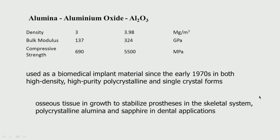Let us look a little bit at each one of these biomaterials. The oxides — alumina (aluminium oxide, Al2O3) — has a certain density, bulk modulus, and compressive strength. It has been used as a biomedical material since the early 1970s in both high density, high purity, polycrystalline and single crystal forms. It is used in osseous tissue ingrowth to stabilize prosthesis in the skeletal system, polycrystalline alumina and sapphire in dental applications. It is found mostly in fillers, bone replacement, and coatings in orthopedic and dental filling.